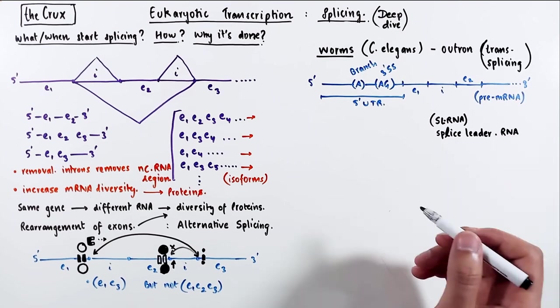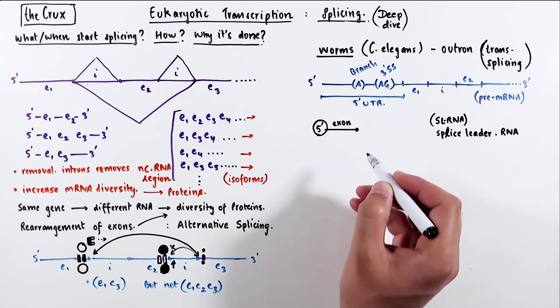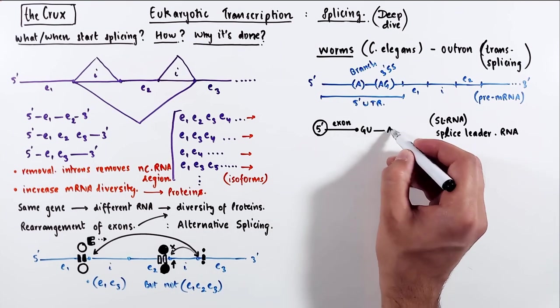Worms also have this special RNA known as splice leader RNA, which is a short RNA containing about 40 or so nucleotides long exon, followed by an intron.